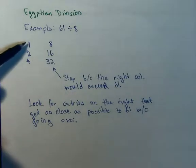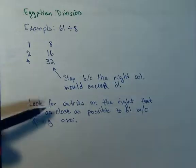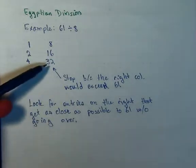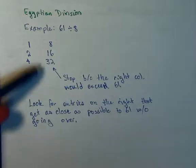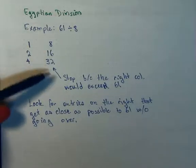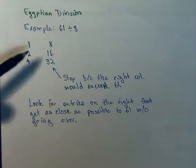When we were doing a multiplication problem, we were looking for entries in the left-hand column. Here, we're looking for entries in the right-hand column. Also, with multiplication, we wanted to get the exact result from adding up the entries in the left-hand column. Here, with a division problem, we are not guaranteed that's going to happen. We're just going to try to get as close as possible.